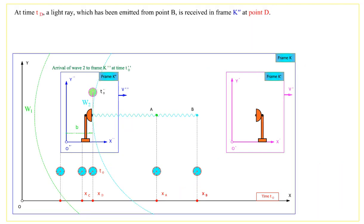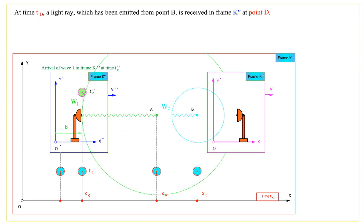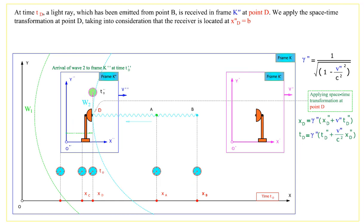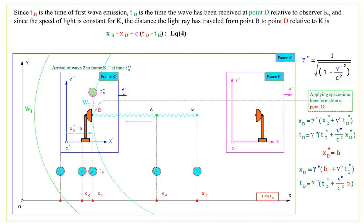At time Td, a light ray which has been emitted from point B is received in frame K'' at point D. We apply the spacetime transformation at point D, taking into consideration that the receiver is located at X''D equals B. Since Tb is the time of first wave emission, Td is the time the wave has been received at point D relative to observer K, and since the speed of light is constant for K, the distance the light ray traveled from point B to point D relative to K is X'B minus X''D equals C times (Td minus Tb).